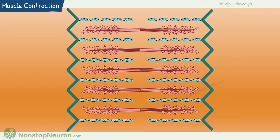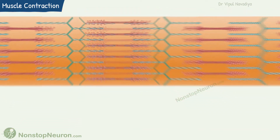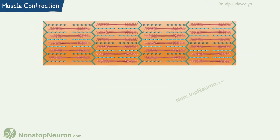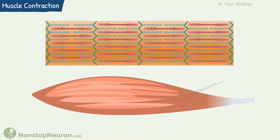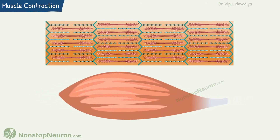In this way, thin filaments are pulled over thick filaments. The same thing happens at the opposite end also, and this pulling shortens the sarcomere. A similar shortening of all the sarcomeres reduces the length of the muscle fiber and thereby the muscle, producing muscle contraction.